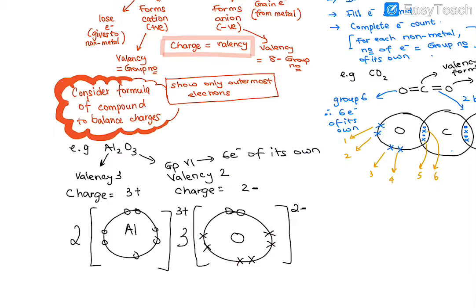Oxygen has six electrons of its own and then gains two electrons from aluminium, so the charge is 2- because the valency is 2. To balance the charge, we consider the formula of the compound. There are two Al so we put a 2 here, and three oxygen so we put a 3 here. The charges are balanced in Al2O3.